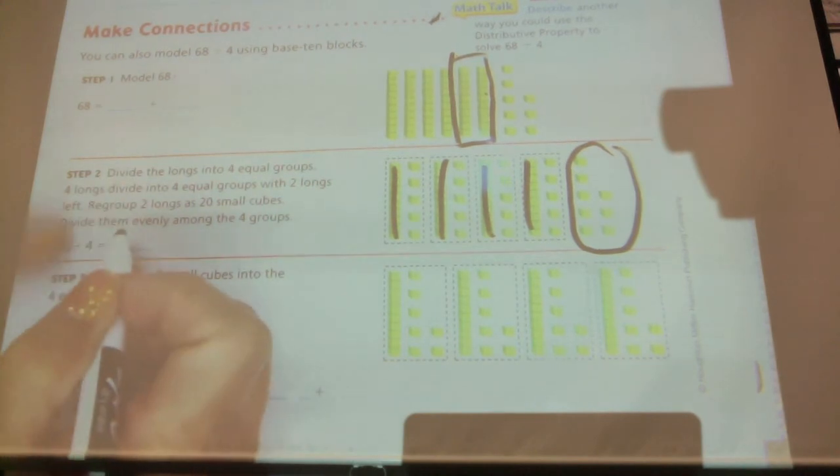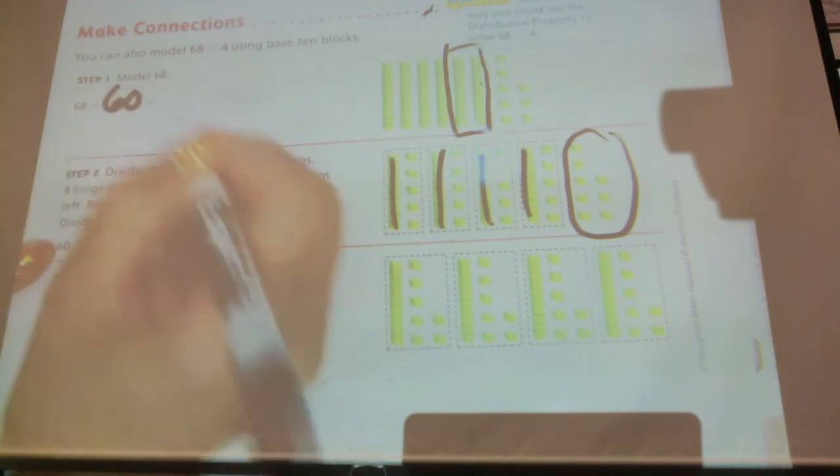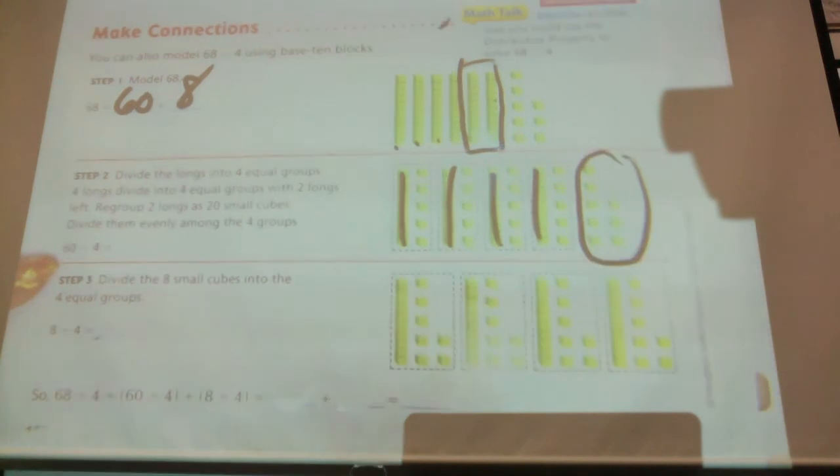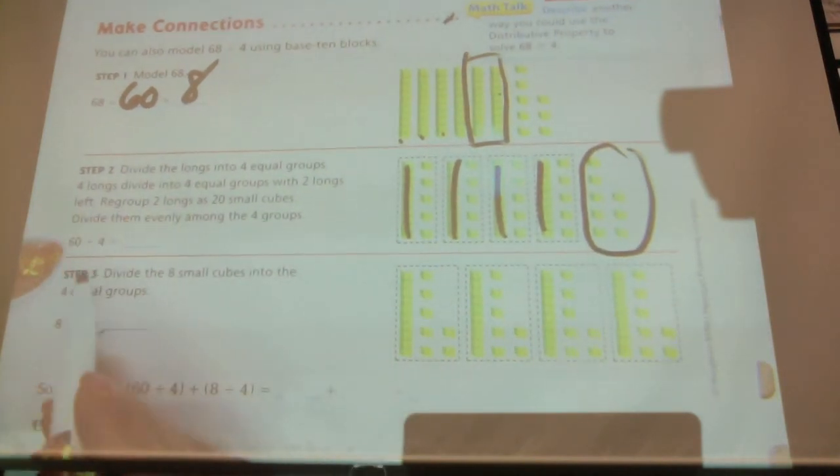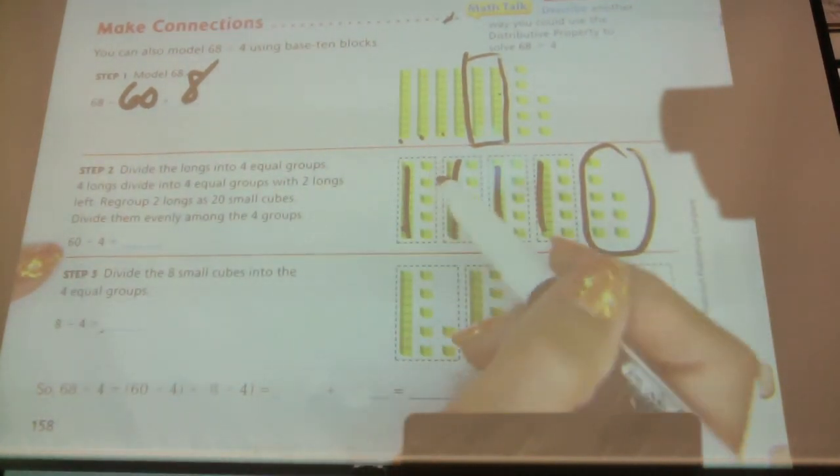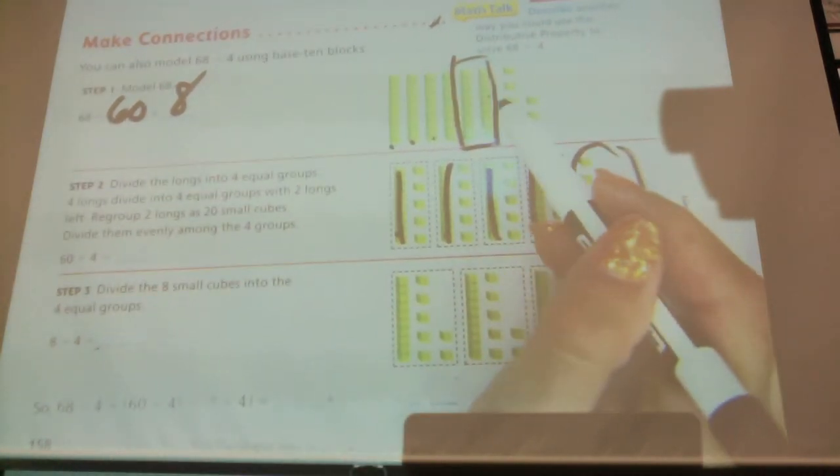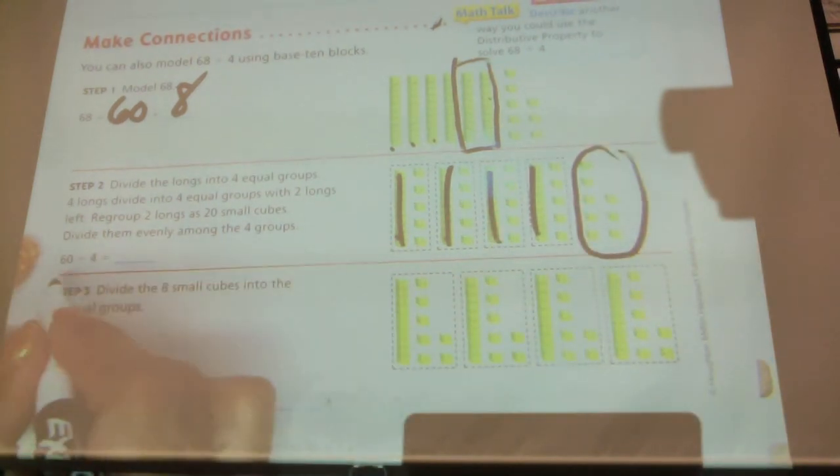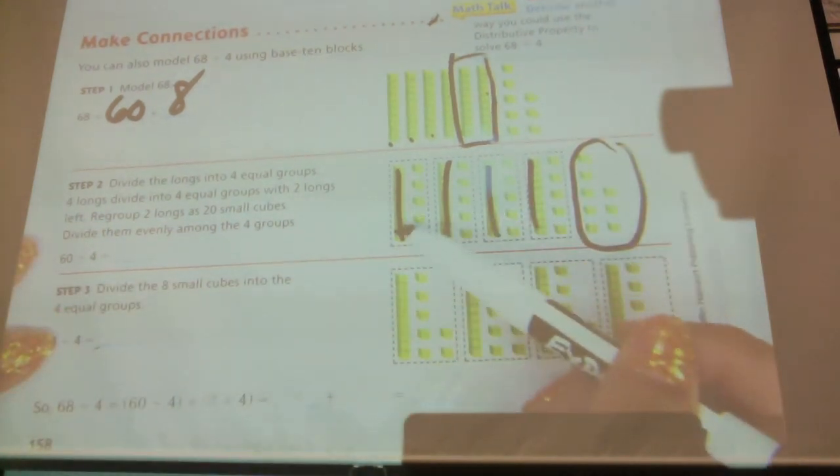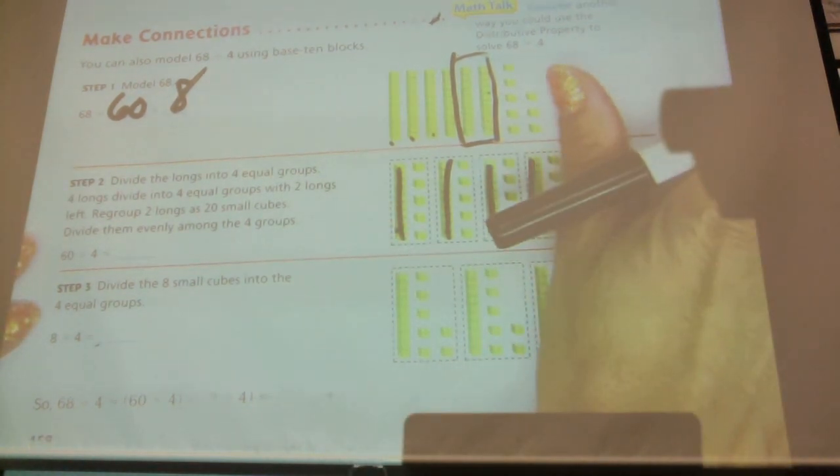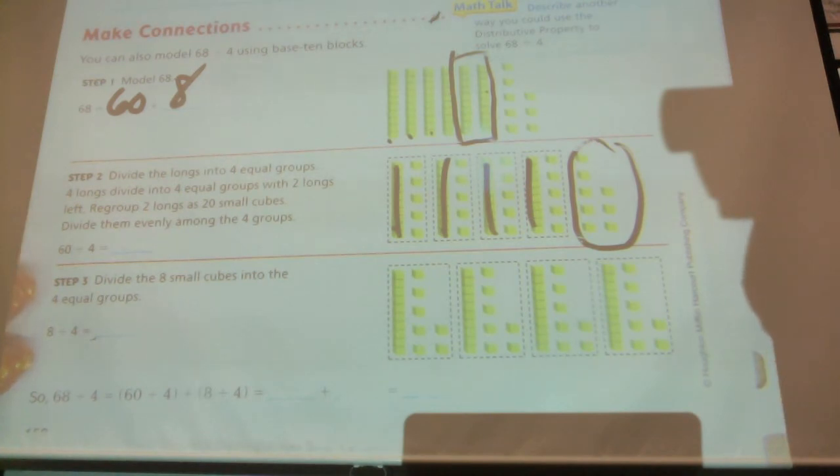So in this first step, first we'll write down our 10 blocks. We had 60, 10, 20, 30, 40, 50, 60, plus the eight. And this step is where they took the four longs and then added an additional five because they divided the extra 20 into groups. And so 60 divided by four, how much are in each of these groups? Raise your hand when you can tell me. Not this, but just these groups here. How many are in each of those groups? Sean? 15.